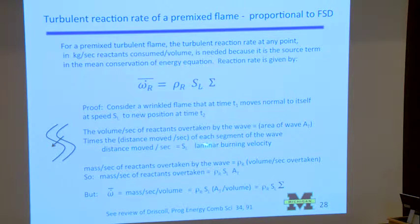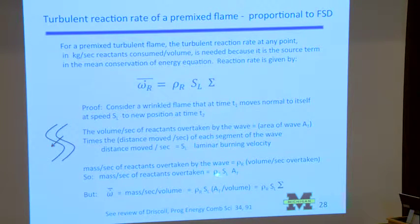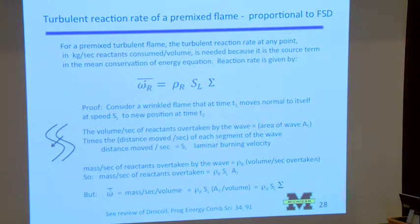If it's a laminar flamelet, the distance it moves normal to itself is the laminar burning velocity. The mass per second consumed is just the density of the reactants in this sliver multiplied by the volume per second. So the mass per second of reactants overtaken as the flame moves is the density times the laminar flame speed times the area of this wrinkled surface, A_T. The mass per second per unit volume consumed equals rho * S_L * A_T divided by volume. Dividing A_T by volume gives us the flame surface density — the area per unit volume.